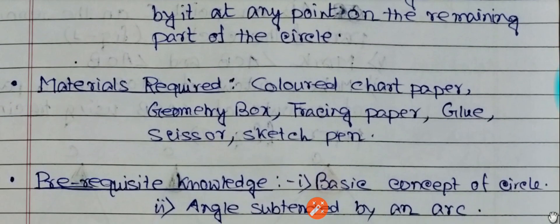For that, materials required are colored chart paper, scissors, glue, tracing paper, geometry box, etc.